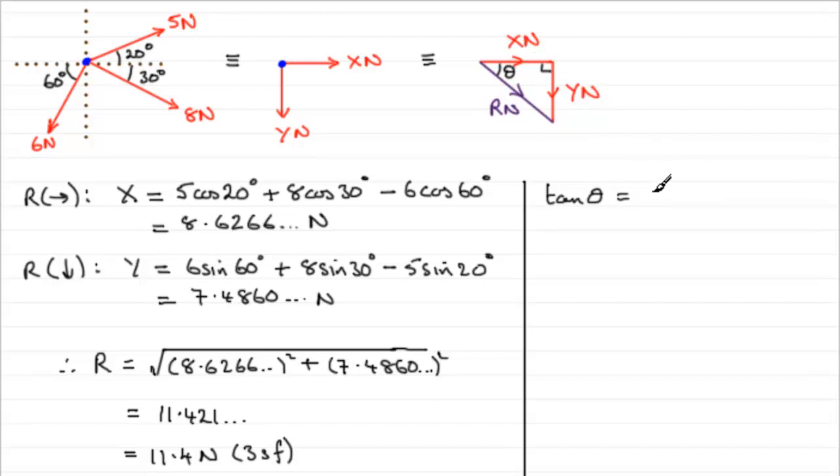So we would have our y value then as 7.4860 and so on and that's being divided by our x value of 8.6266 and so on. If you work that out and take the inverse tan of it you'll find that you'd therefore have theta equals 40.950 and so on degrees. So if we're to round that up to three significant figures you're going to get 41.0 degrees to 3sf.